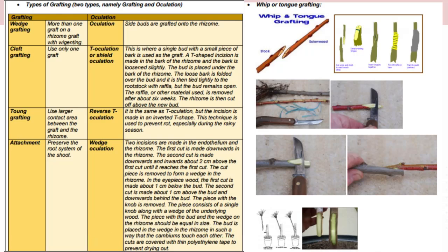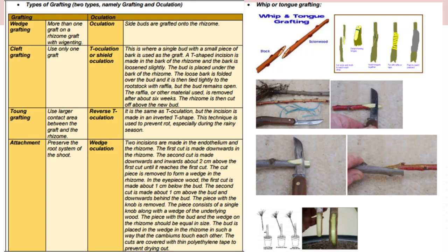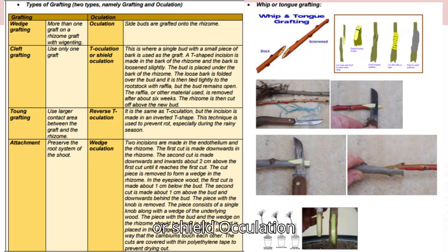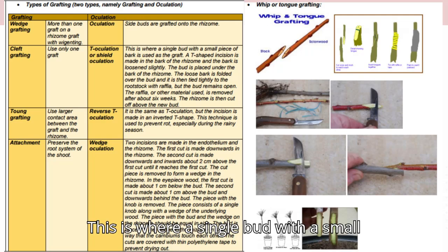Cleft grafting uses only one graft. T-oculation, also known as shield oculation: this is where a single bud with a small piece of bark is used as the graft. A T-shaped incision is made in the bark of the rootstock and the bark is loosened slightly. The bud is placed under the bark of the rootstock.